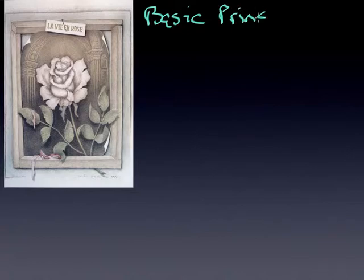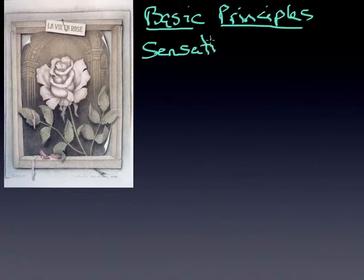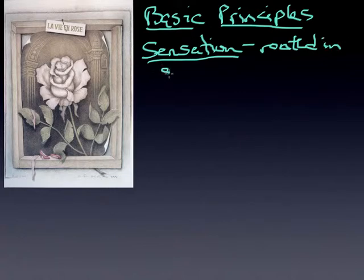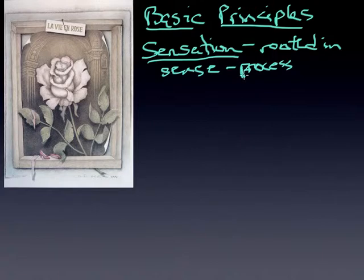The very first term I want to make sure we have clear is the actual word sensation. When you hear this, a lot of times we confuse our terms, but this is rooted in our senses. The five senses are the input devices — thinking in terms of a computer — that get information to the brain. Sensation is the process by which our sensory receptors and nervous system receive and represent stimulus energies from our environment.